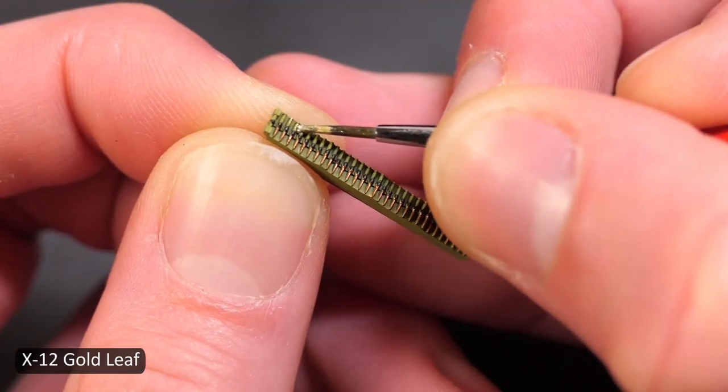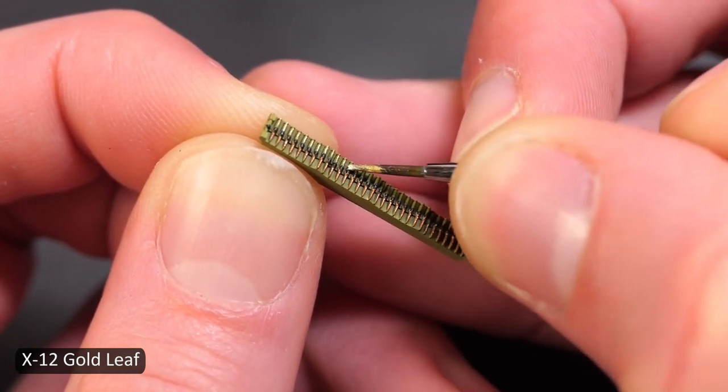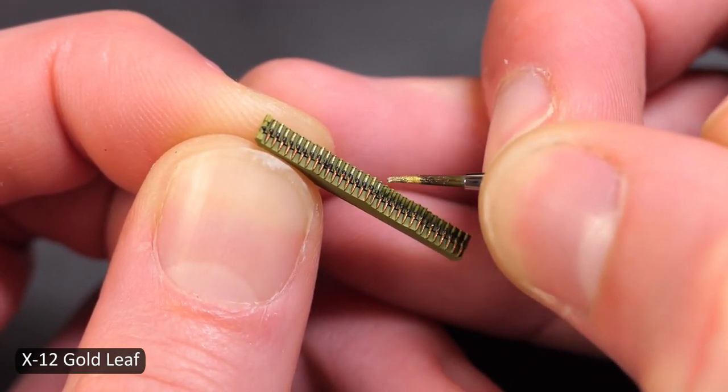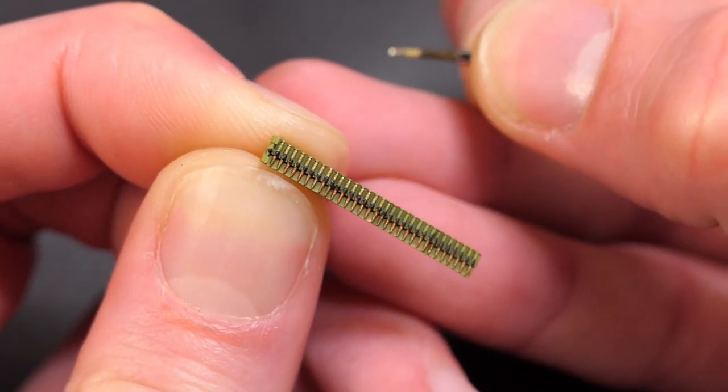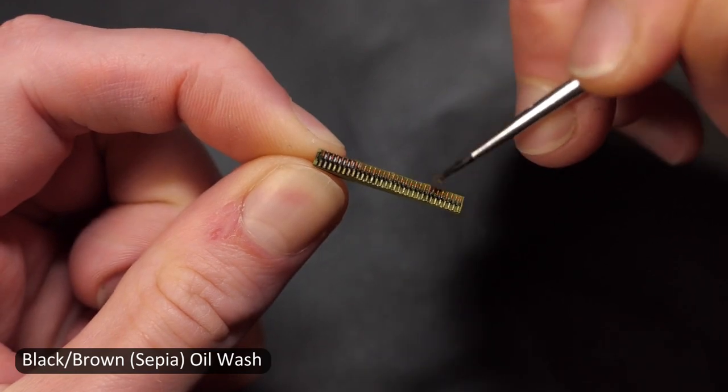I'm not sure if Tamiya makes a brass color but it didn't matter at the time because gold was all I had and it turned out to be a close enough color regardless of the name. I could have said it was brass for this video and nobody would have blinked an eye.